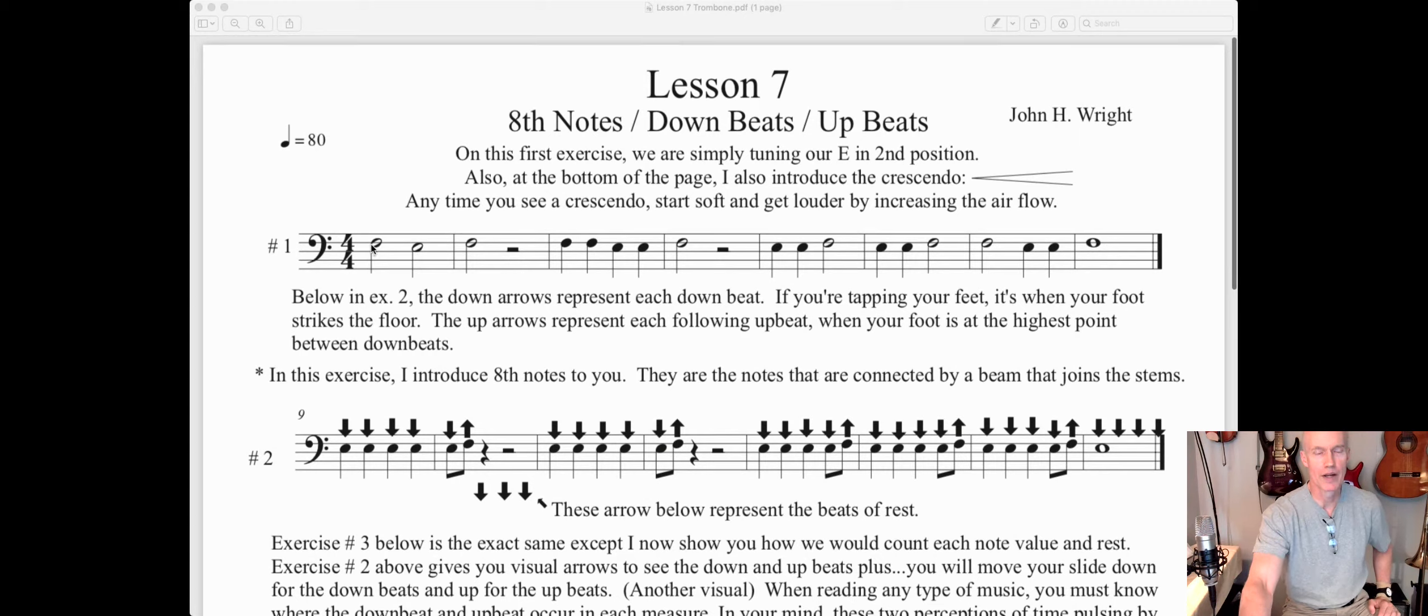This is pretty much a review. Exercise number one: getting that E natural tuned up where we just drop the slide just a little bit. We're going to play this not at 80 beats per minute but at 90 beats per minute to make it flow a little bit faster.